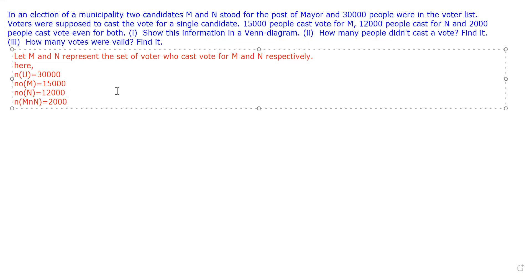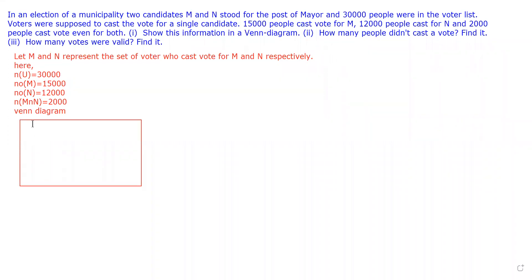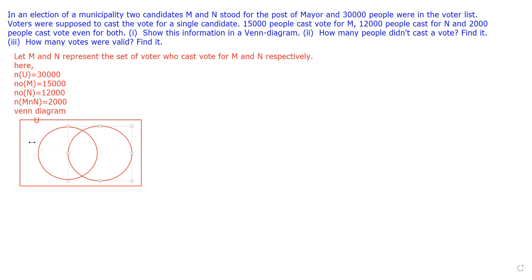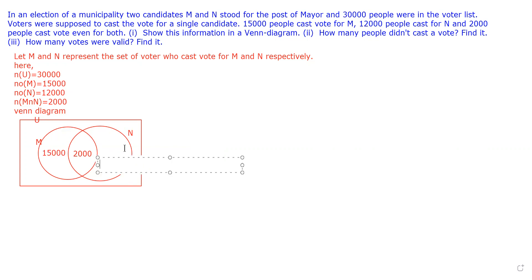Now let's show this information in a Venn diagram. This involves only two sets, so we shall make only two circles. One circle represents M and another represents N. The intersection is 2,000, because 2,000 people cast vote for both. Only M is 15,000, so we write 15,000 on the M side. Only N is 12,000, so we write 12,000 on the N side.